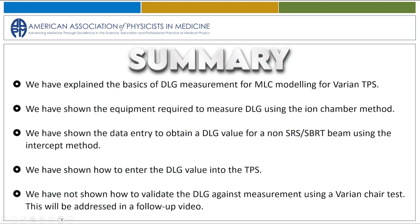In summary, we have explained the basics of DLG measurement for MLC modeling for a Varian TPS. We have shown the equipment required to measure DLG using the ion chamber method, the data entry to obtain a DLG value for a non-SRS/SBRT beam using the intercept method, and how to enter the DLG value into the TPS. We have not shown how to validate DLG against measurement using a Varian chair test — this will be addressed in a follow-up video.